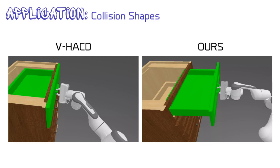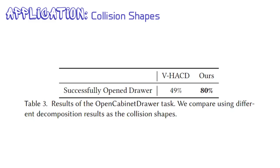As shown here, the collision shapes by our method preserve fine-grained details of the handles, while the collision shapes by VHACD fill the holes of the handles. The table shows that by using more accurate collision shapes from our method, the RL agents achieve a much higher success rate.